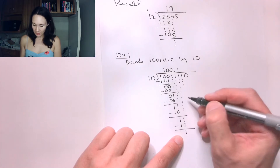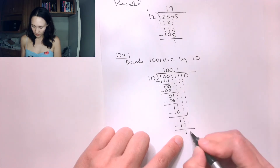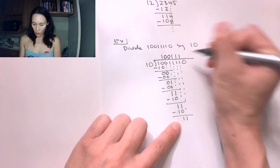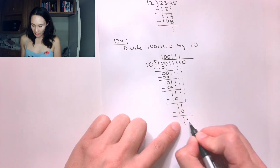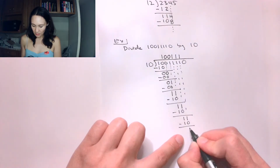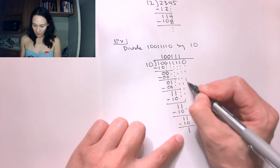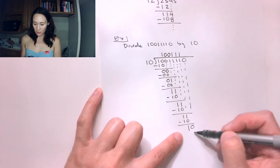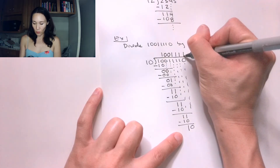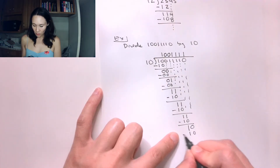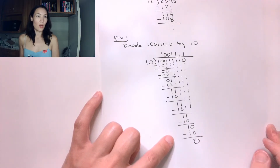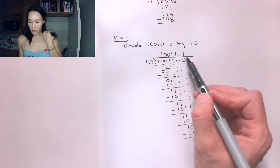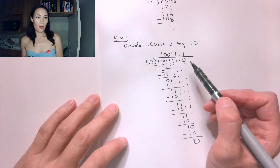We drop down this next 1. 10 goes into 11 one time again. We multiply, change the sign, and subtract. Now we drop down our last digit, which is a 0. How many times does 10 go into 10? The answer is 1. Here we get 10. We subtract and we're left with no remainder. So this is our result of the binary long division.